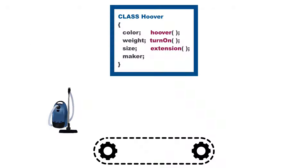How am I going to dynamically generate objects every time a new hoover comes off the line? A hoover is built, it goes through a machine, the machine analyzes it, scans it, and then it needs to create an object. That object needs to go into a database so I can keep track of all my products. In order to do that, we have classes. In JavaScript, we don't have classes — we use something called constructor functions. But their job is the same thing: to build objects.